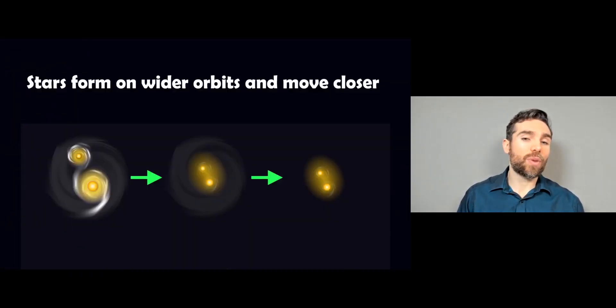Now, how do they get like that? Well, when they form, they'll form in a disk at relatively wide orbits. And then over time, they actually migrate in together. So they have to get closer and closer until they're in that contact binary configuration.